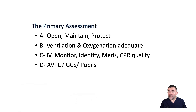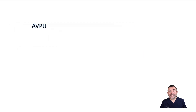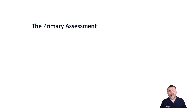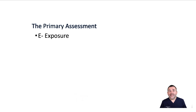Disability involves checking for neurological function. Quickly assess for responsiveness, level of consciousness, and pupil dilation. A quick tool that we can use to evaluate neurological status is AVPU: alert, voice, pain, and unresponsive. Finally, exposure involves exposing the patient. Remove clothing so that we can perform a physical examination looking for obvious signs of trauma, bleeding, burns, unusual markings, or medical alert bracelets.